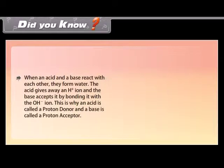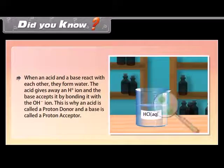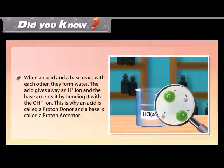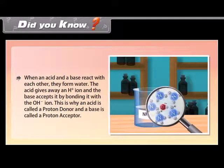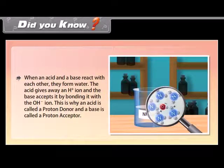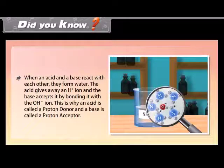Did you know? When an acid and a base react with each other, they form water. The acid gives away an H⁺ ion and the base accepts it by bonding it with the OH⁻ ion. This is why an acid is called a proton donor and a base is called a proton acceptor.